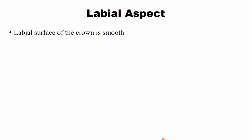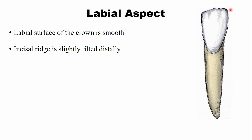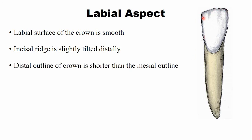From the labial aspect, the labial surface of the crown is smooth with very faint developmental depressions or developmental lines near the incisal surface and near the cervical third of the crown. The incisal ridge is slightly tilted towards the distal side, creating a slope from mesial to distal. Because of this slope, the distal outline of the crown is shorter compared to the mesial outline.